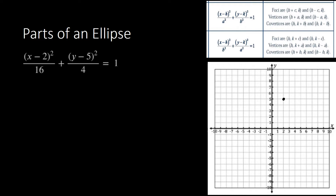We have the vertices: h plus a, comma k and h minus a, comma k — or simply h plus or minus a, comma k. That is for the vertices. And for co-vertices we have h, comma k plus b and h, comma k minus b — or simply h, comma k plus or minus b. That is for the co-vertices with horizontal orientation.